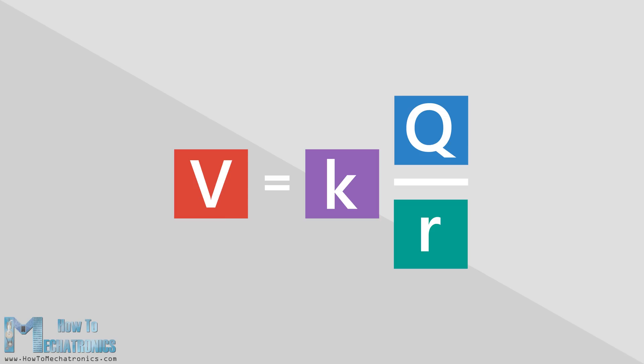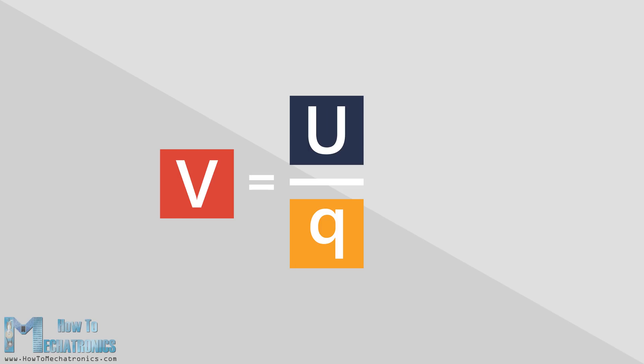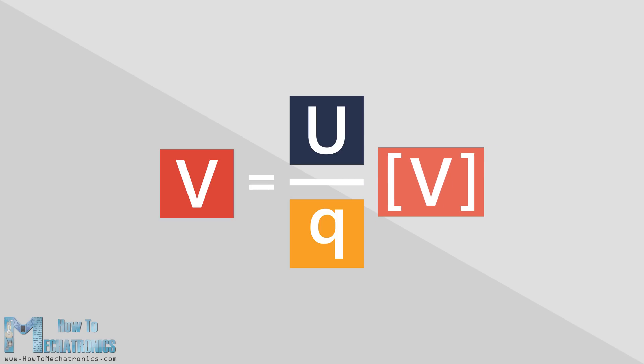Finally, we would get an amount of electric potential energy that each unit of charge would have at that point. Now let's go back to the basic equation. We know that electric potential energy is measured in Joules, and the unit of charge is Coulombs, so the unit of measurement for electric potential is Joules per Coulomb, or in one word, volts.